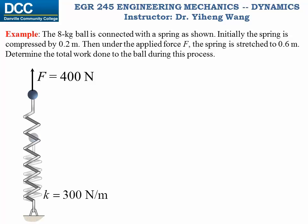Let's look at this example. A ball with a mass of 8 kg is connected to a spring with a spring constant of 300 newton per meter. Initially the spring is compressed by 0.2 meter, and then after a 400 newton force is applied, the spring is stretched to 0.6 meter. We need to determine the total work done to this ball during this process, which includes the work done by all external forces: the applied force of 400 newton, the weight, and the spring force.